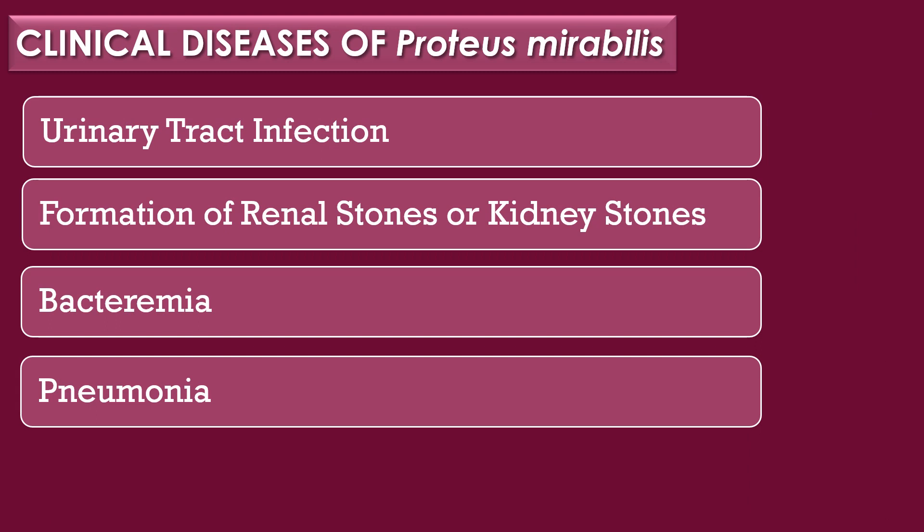Clinical diseases of Proteus mirabilis: Proteus mirabilis results in four clinical diseases — urinary tract infection, formation of renal stones or kidney stones, bacteremia, and pneumonia.